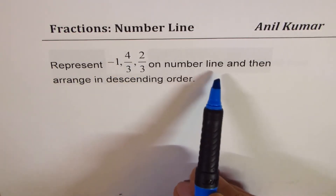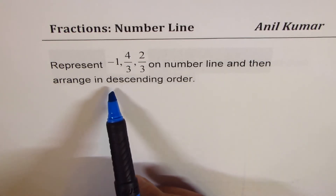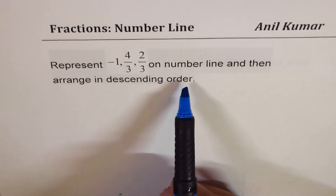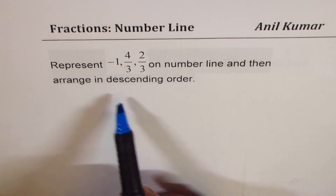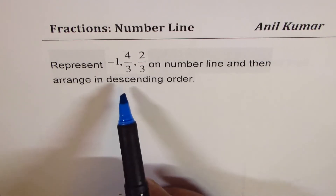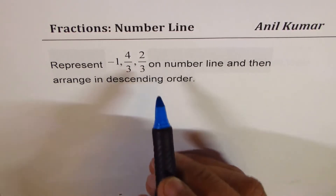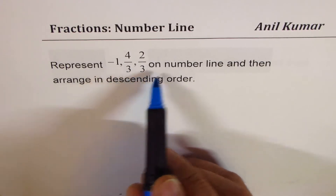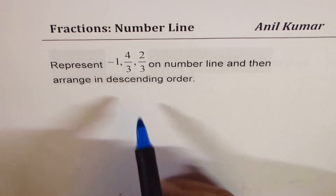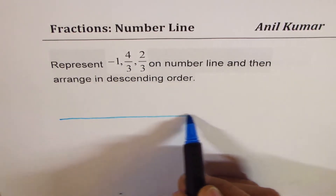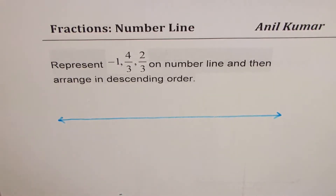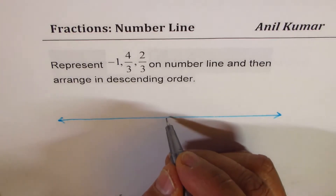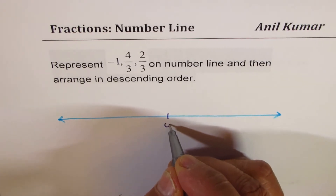Then arrange them in descending order. Descending order means highest to lowest — decreasing order. Let us understand how to represent these fractions on a number line. Let me draw a line here and begin by marking 0 somewhere in the center.